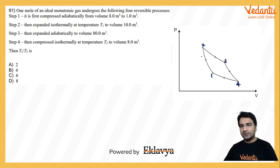1 se 2 adiabatic compression hai, starting from 8 meter cube to 1 meter cube, compression ho raha hai, then uske baad expansion hai 2 se 3, isothermal expansion hai temperature T1.